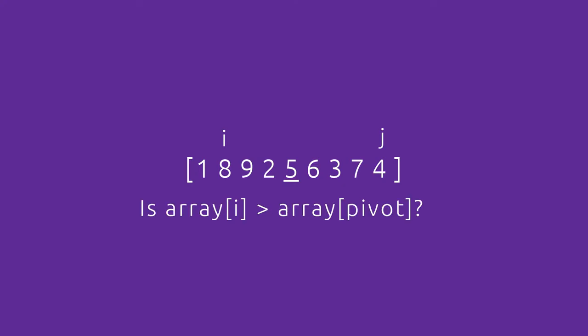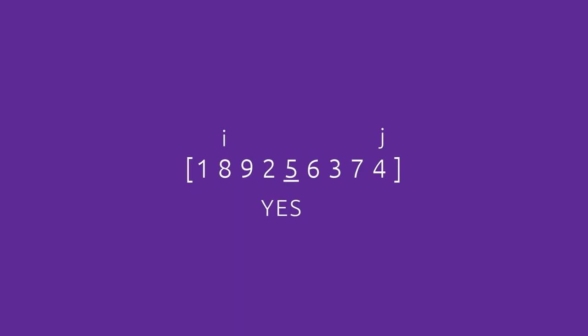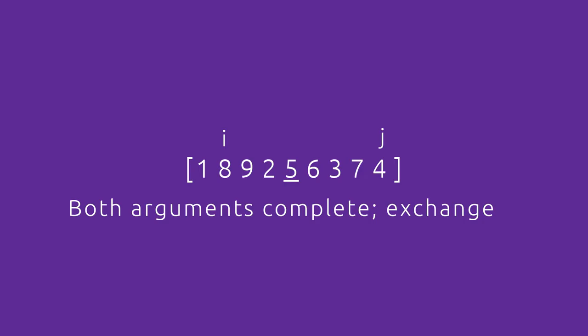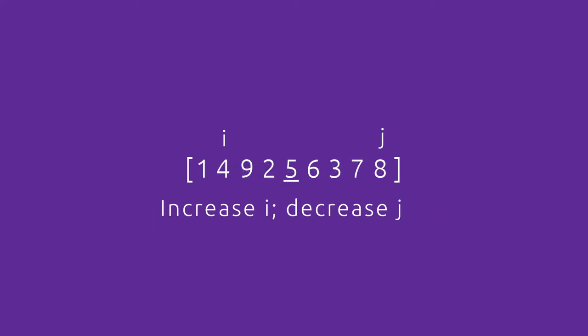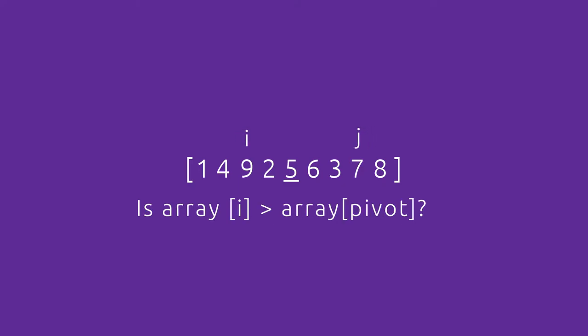Now i is at index one with value eight, and eight is greater than five, so we stop increasing i. Since both i and j have stopped moving, we make an exchange between the two elements using a temporary variable. Once exchanged, we increase i and decrease j.